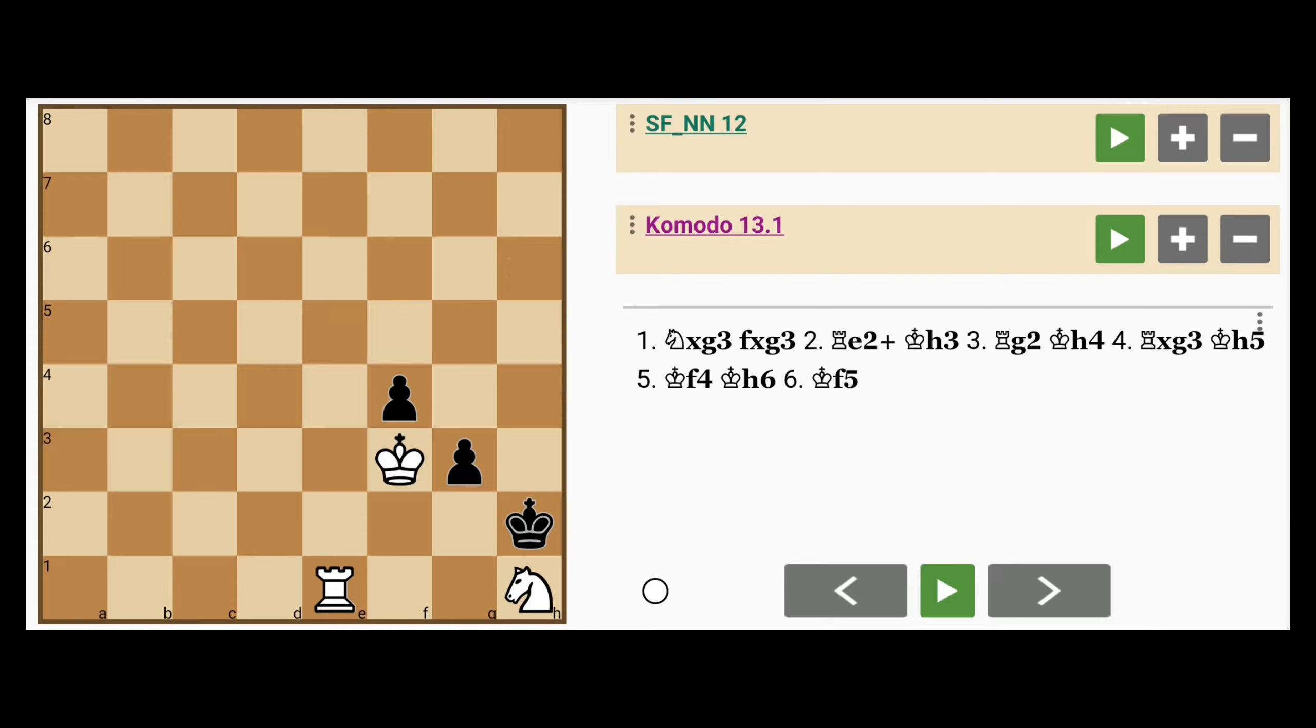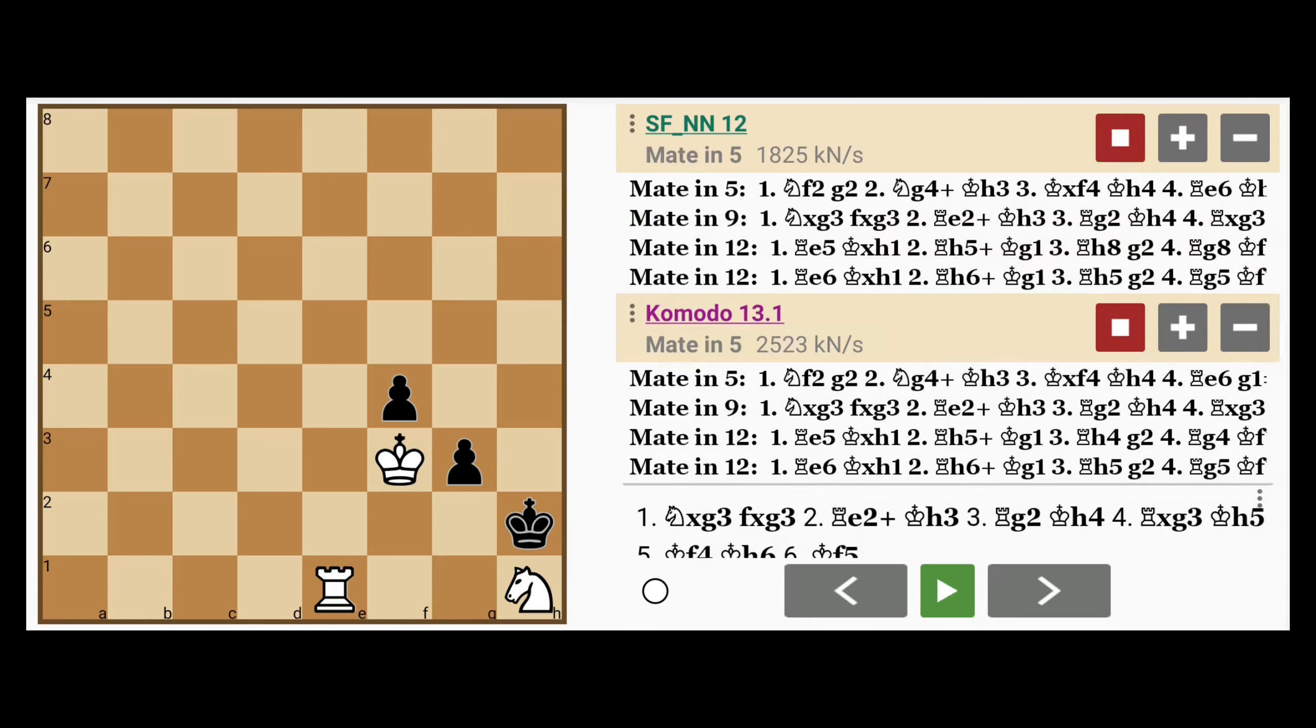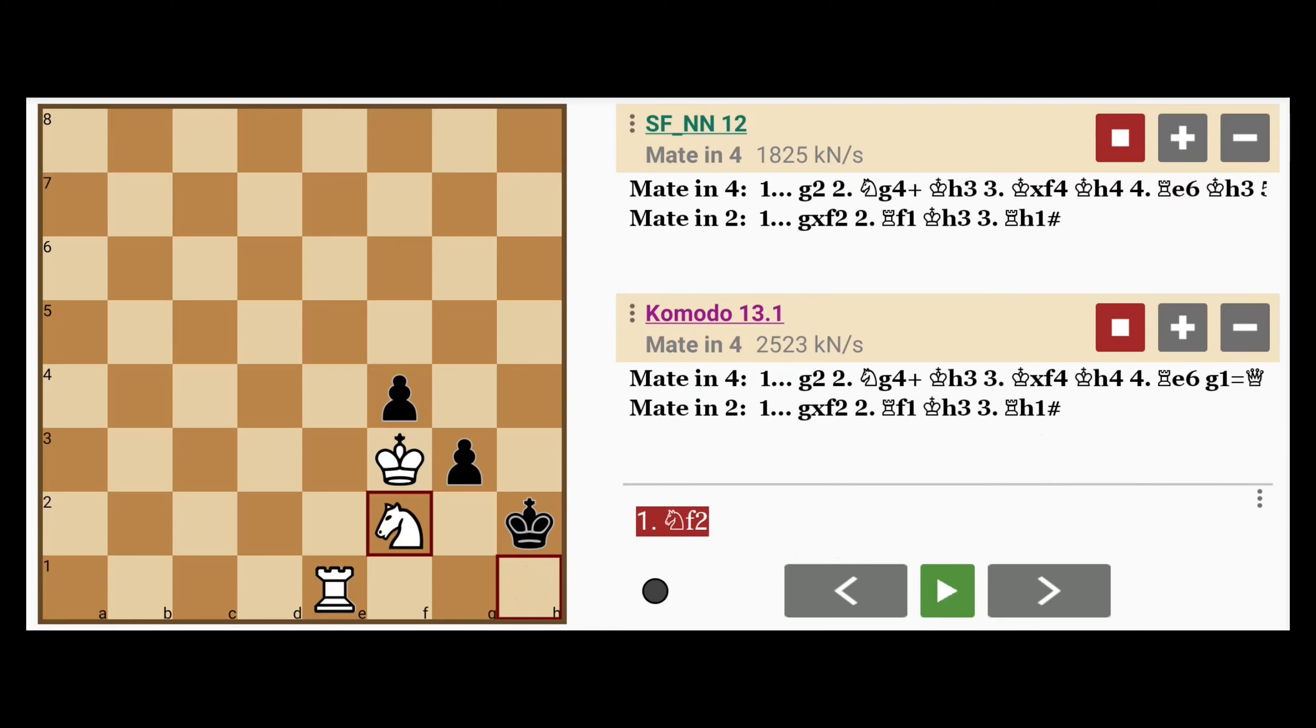But is that the best way to proceed? There's actually a faster way, believe it or not. And I'll show you how. So the knight still needs to be given up. But even more completely, with knight to f2, a full knight sacrifice. Not exchanging for a pawn.